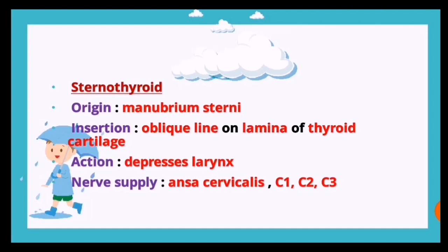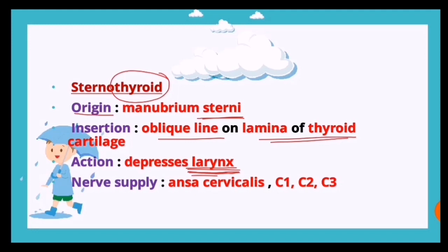The sternothyroid: origin is the manubrium sterni, insertion is the oblique line on the lamina of the thyroid cartilage, action is it depresses the larynx (not the hyoid, since it attaches to the thyroid cartilage), and nerve supply is the ansa cervicalis - C1, C2, and C3.